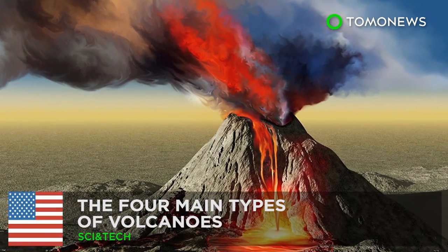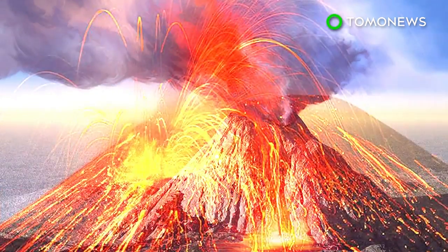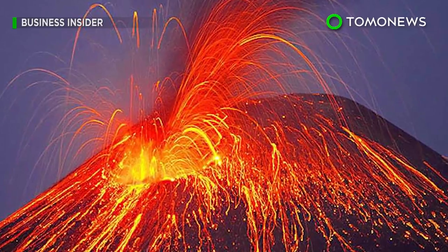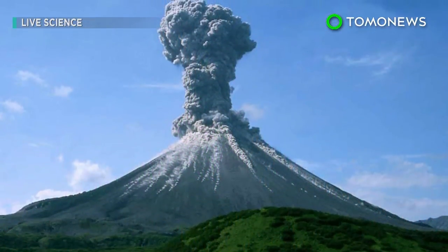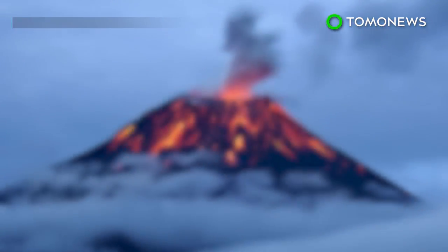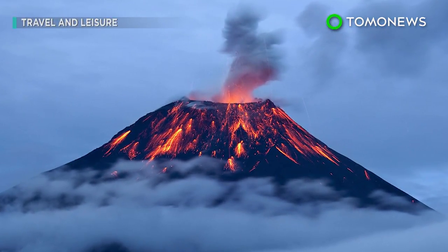The Four Main Types of Volcanoes. A volcano is an opening in the Earth's surface where molten rock can escape. The Earth's crust is made up of tectonic plates that shift and move. Volcanoes are often located at the fault lines between these plates.